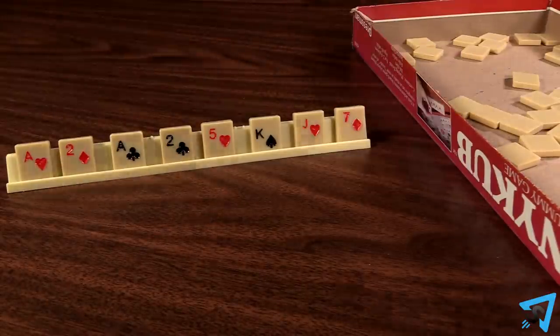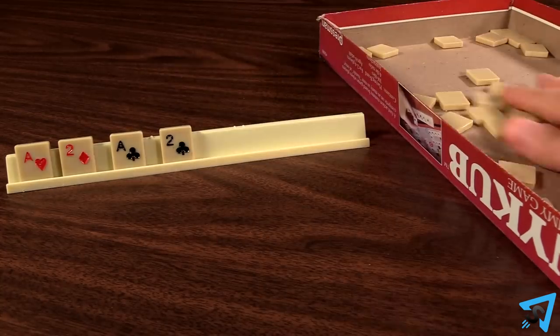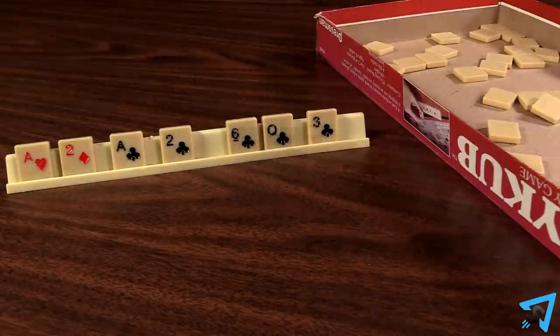If you cannot play, then return one or more of your tiles face down to the box, then mix them up, then draw until you have seven. Your turn is now over and the next player goes.